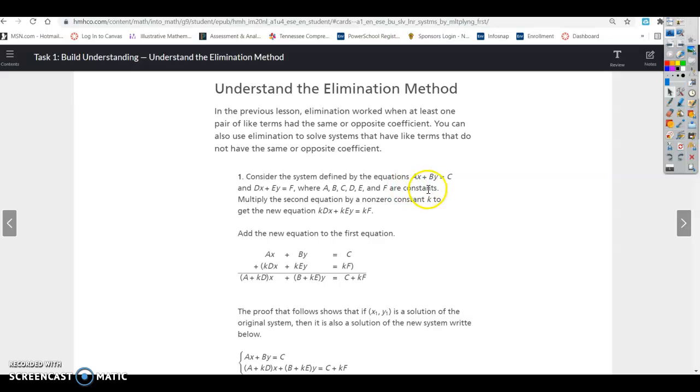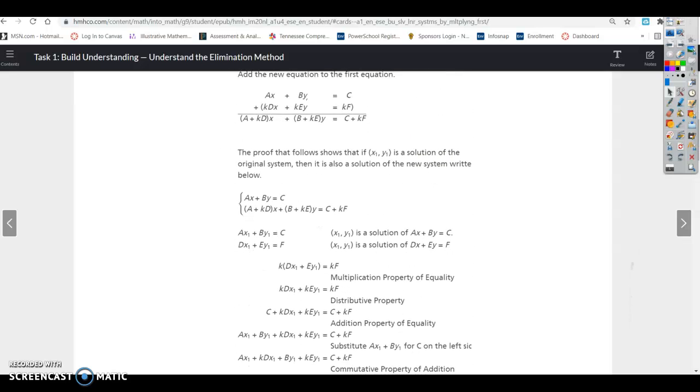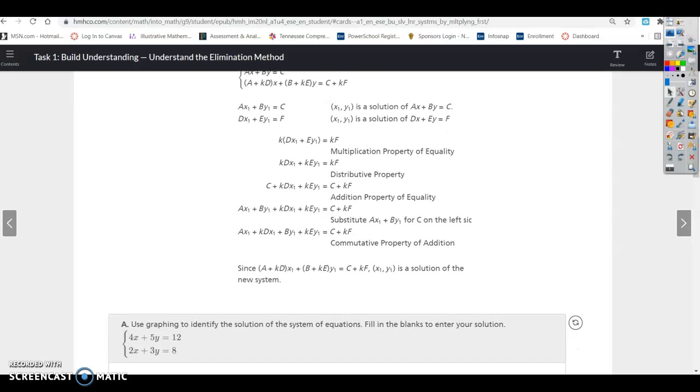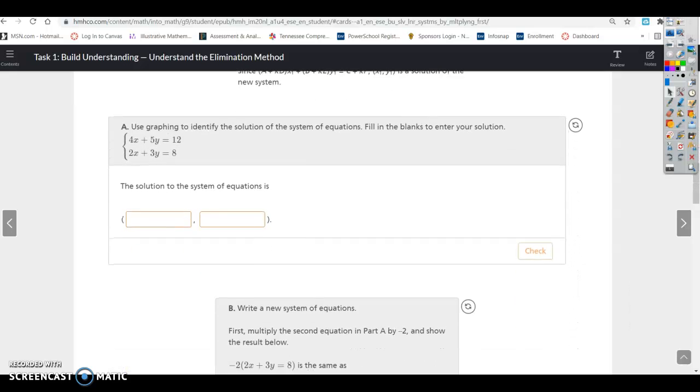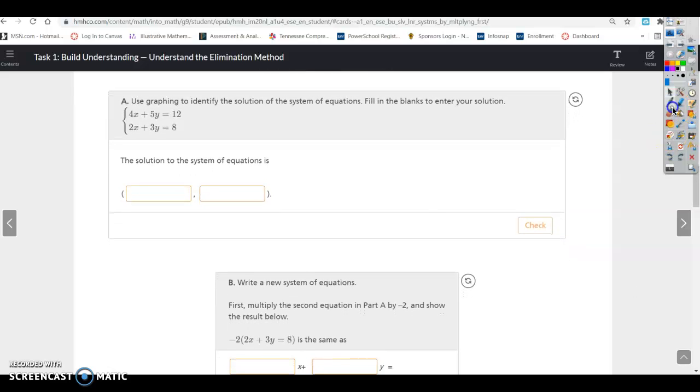So a, b, c, d, e, and f are all constants. It says you can multiply the second equation by a non-zero constant k to get the new equation. So you can see they just multiplied each part of this equation by k. And k is just a non-zero constant, so it's just a number. So this looks very confusing. I'm going to skip through this part of it because this is just a lot of algebra jargon and show you what it's like to actually look at it with numbers.